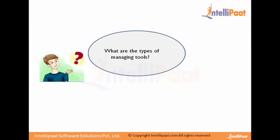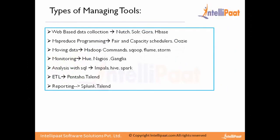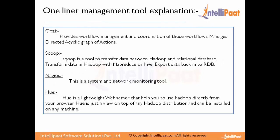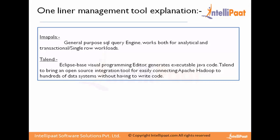Types of managing tools include web-based data collection, MapReduce programming, data movement, monitoring, SQL analysis, and ETL. Solr is a highly extensible and scalable open-source full-text search server. HBase is a NoSQL database. Oozie is used for workflow data management and coordination, managing a directed acyclic graph of actions. Sqoop is used for transferring data between Hadoop and relational databases. Nagios is a network monitoring tool, and Impala is a SQL query engine for both analytical and transactional queries.